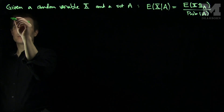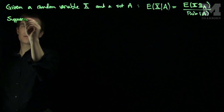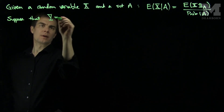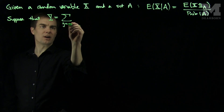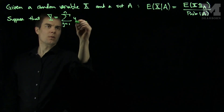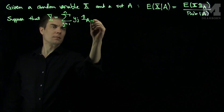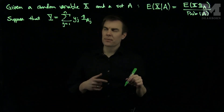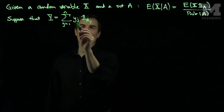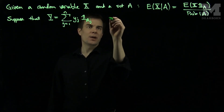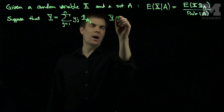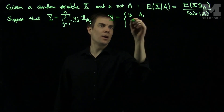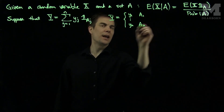Suppose that Y is a simple random variable, taking value Yj on the set Aj. So Y will output Yj on the set Aj. We can define Y piecewise as Y equals Y1 on the set A1, down to Yn on the set An.